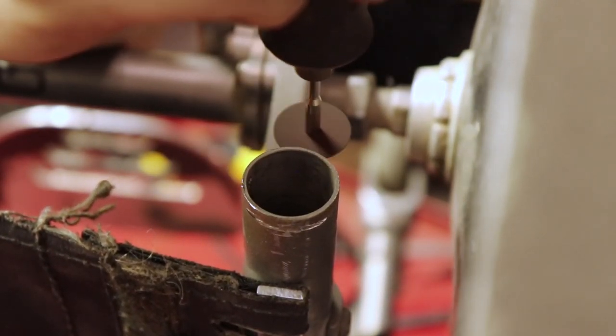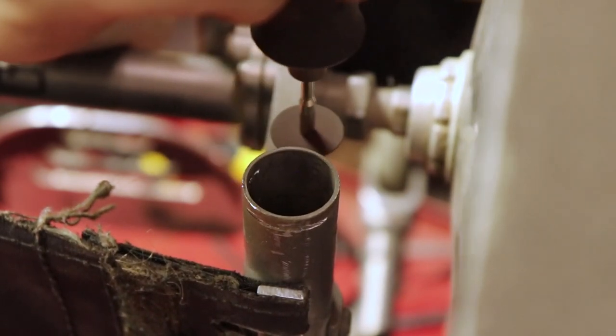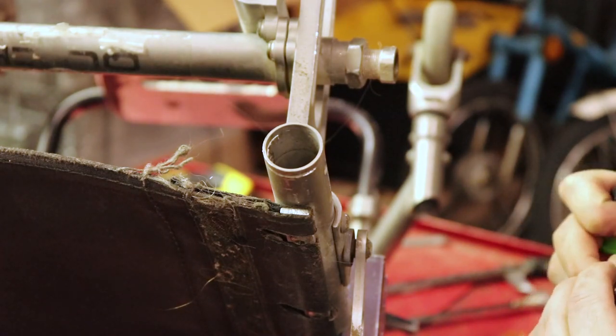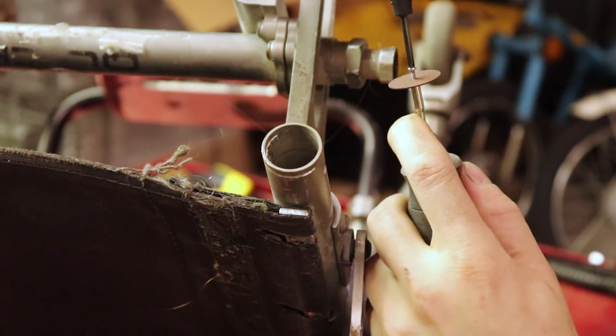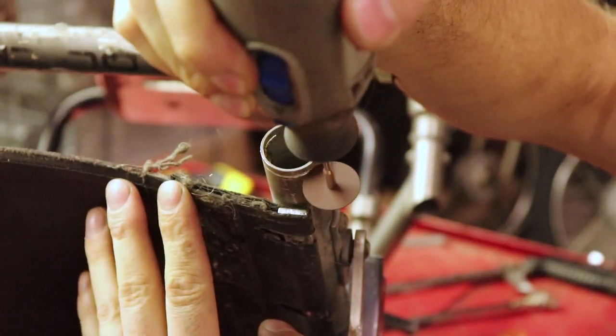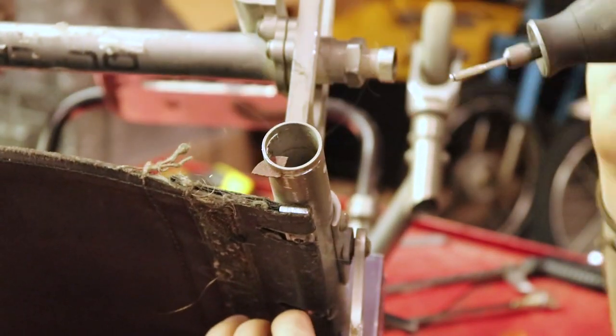The only problem with those types of discs is they just explode every three seconds if you're not careful. I should have gone with the cutoff blade that has the fiberglass reinforcement in it, but I didn't have any at the time, so I just blew through like 20 of these getting it removed.